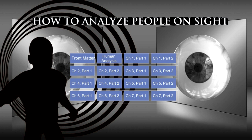Front Matter of How to Analyse People on Sight. This is a LibriVox recording. All LibriVox recordings are in the public domain. For more information or to volunteer, please visit LibriVox.org. This reading by Carl Manchester, 2010.